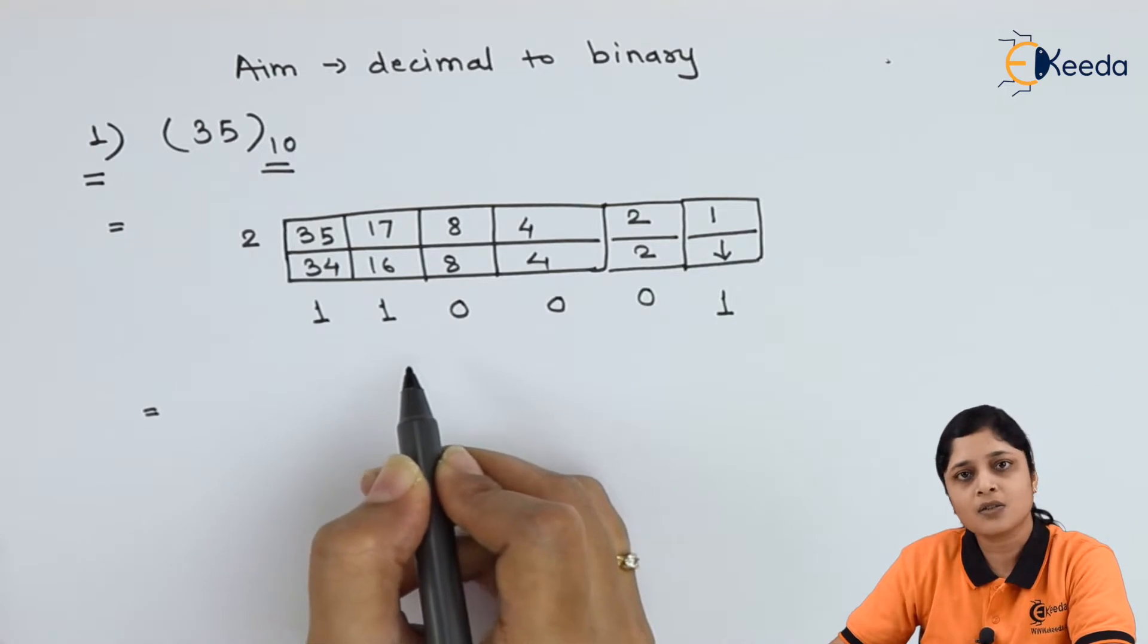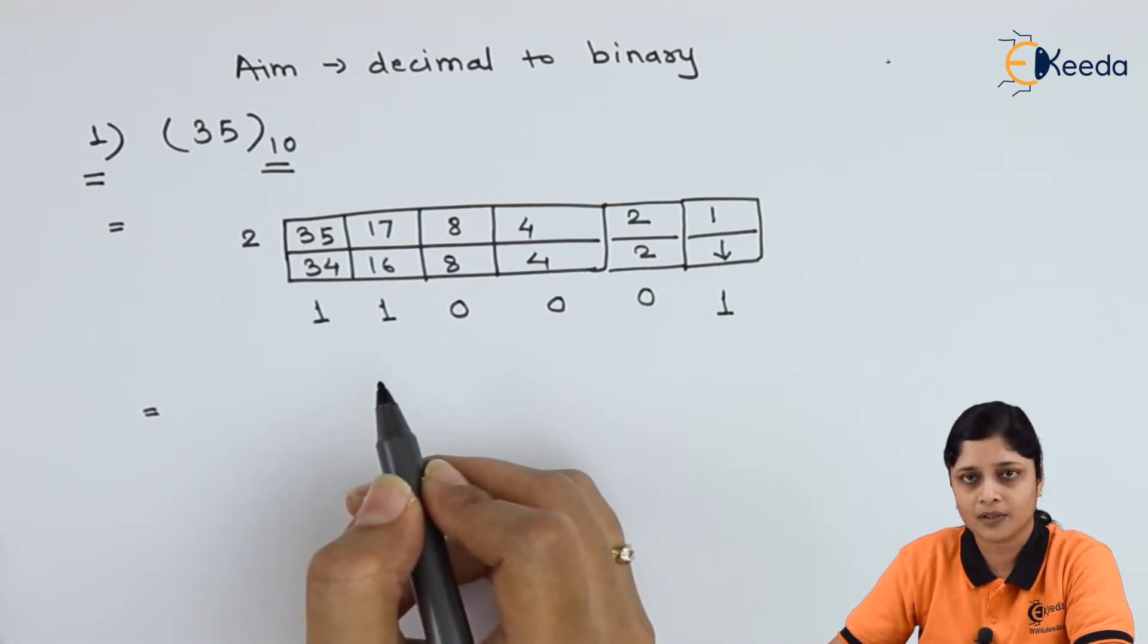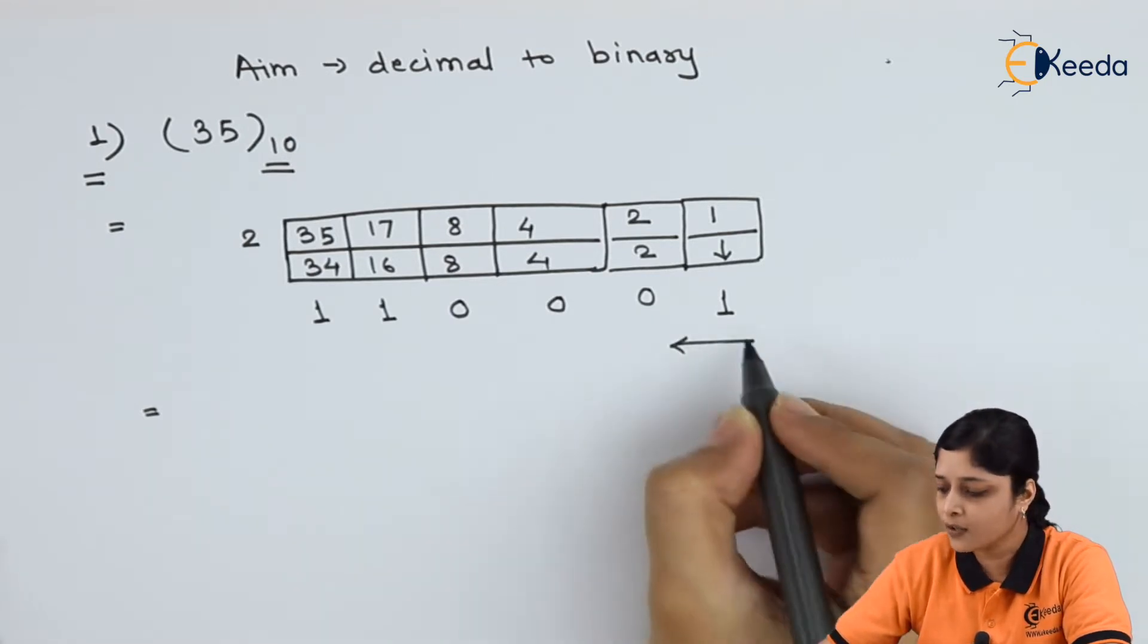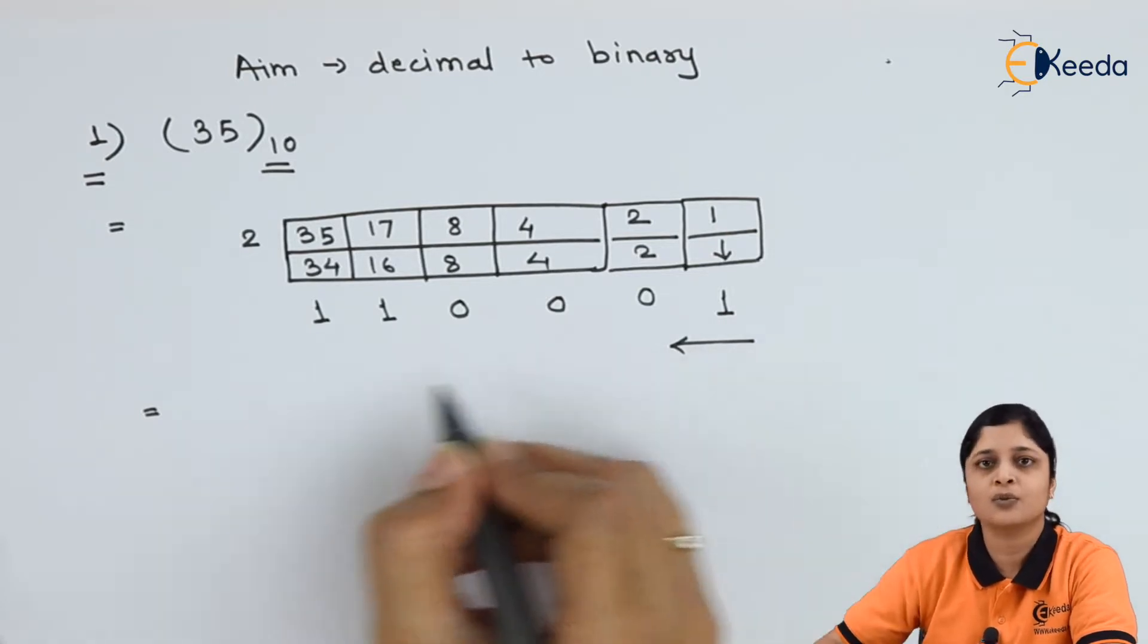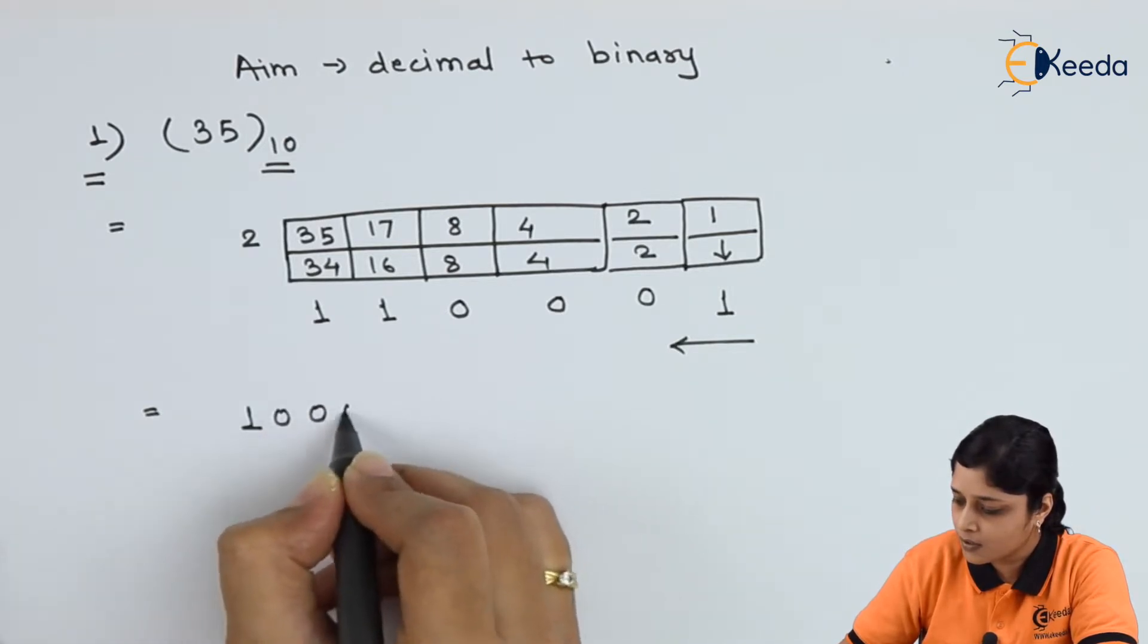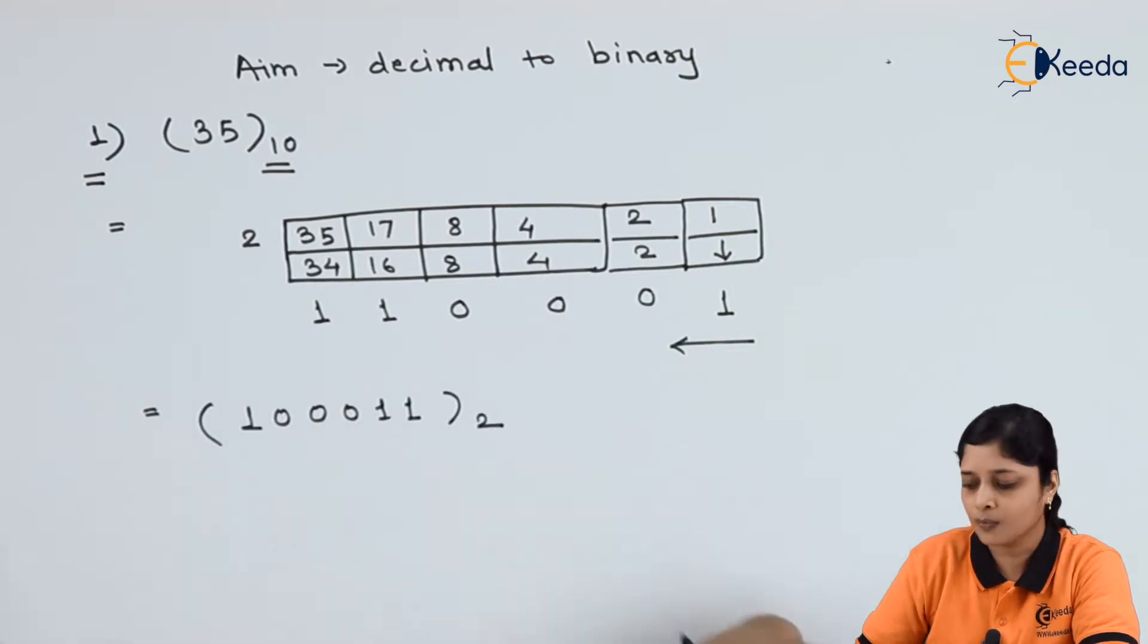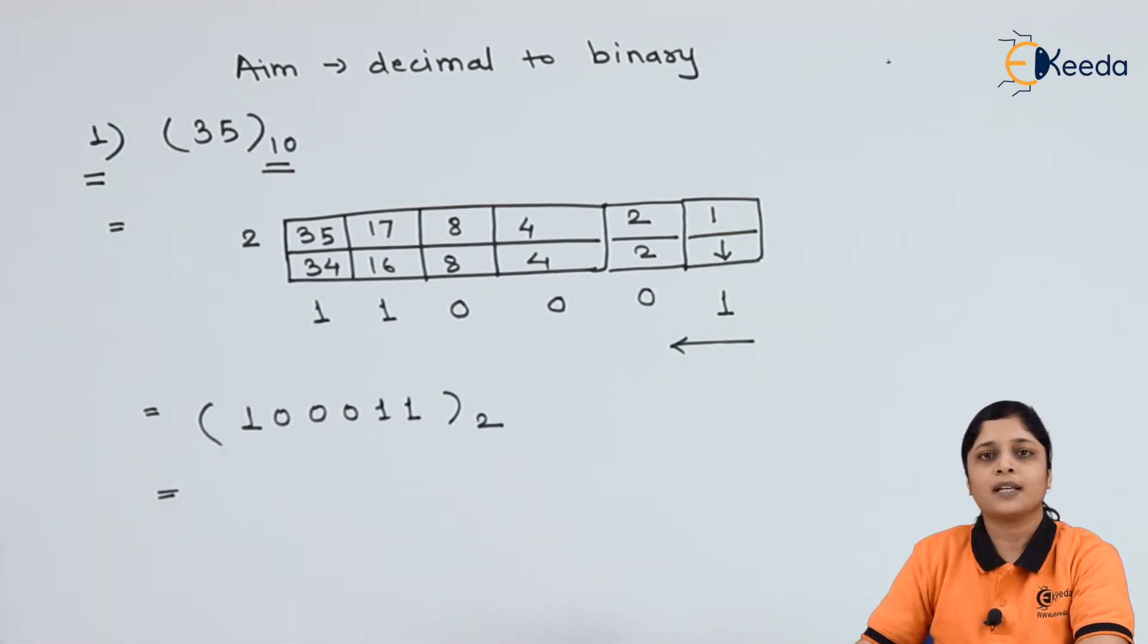This method is called as successive division method. Now final answer how to write. Always draw this arrow and write down answer from this one. You have to go from right side to the left side. So final answer will give you 1 0 0 0 1 1 to the base 2. This will give you final answer.